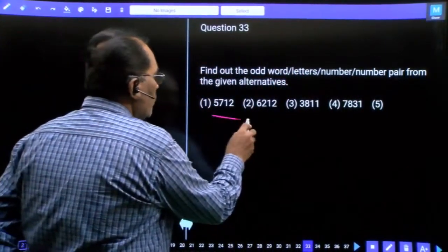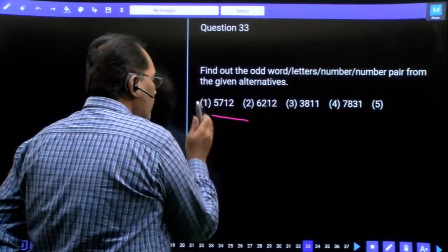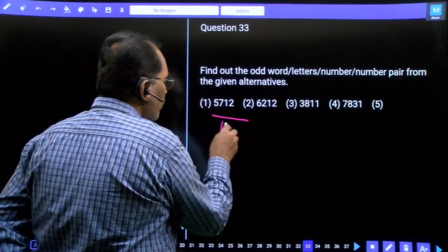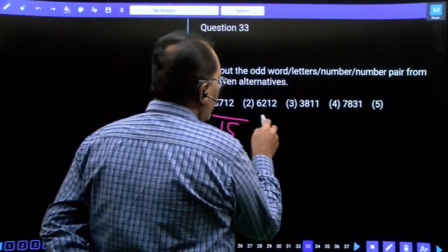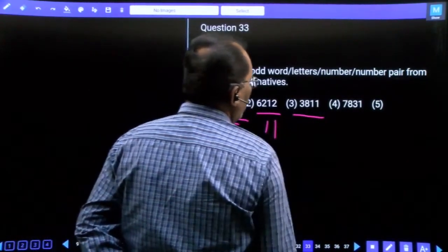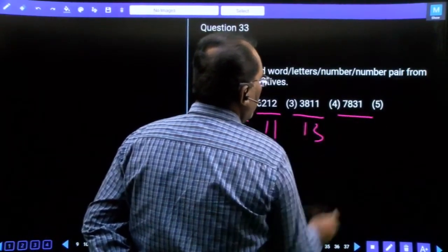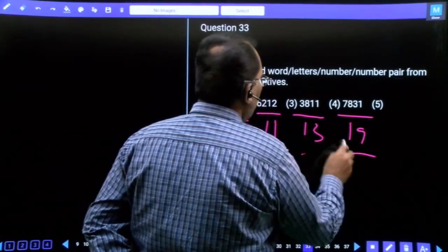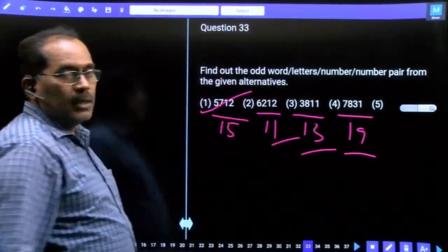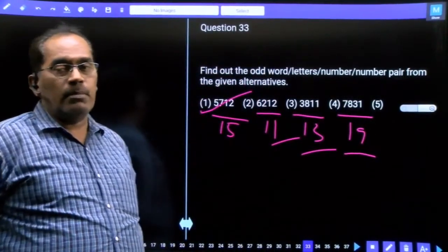Looking at this one, sum equals 5 plus 7 equals 12, 13, 13 plus 2 is 15. Then 9, 9 plus 2 is 11. Then 11, 1, 13. So we have 19, which is prime, prime, prime, whereas this is composite. Sum of the digits gives prime numbers except one composite number.